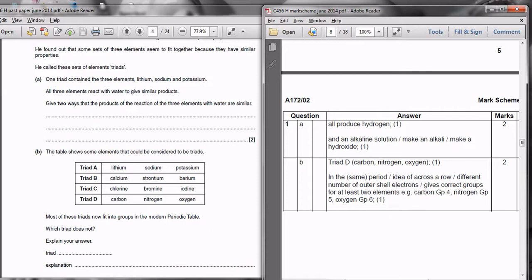You just need the knowledge about group 1 metals reacting in water. It asks you to give two ways that the products of the reaction of lithium, sodium and potassium with water are similar.